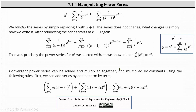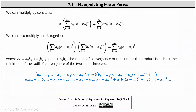Convergent power series can be added and multiplied together and multiplied by constants using the following rules. First, we add series by adding term by term. For the first power series, the coefficients are a sub k; for the second power series, the coefficients are b sub k. Adding the two power series gives the sum from k equals zero to infinity of the sum of a sub k and b sub k times the kth power of the difference of x and x sub zero. We can also multiply by constants: alpha times the given power series equals the sum from k equals zero to infinity of alpha times a sub k times the kth power of the difference of x and x sub zero.